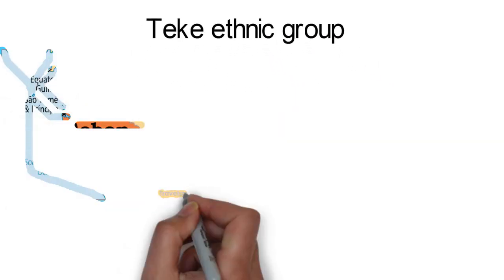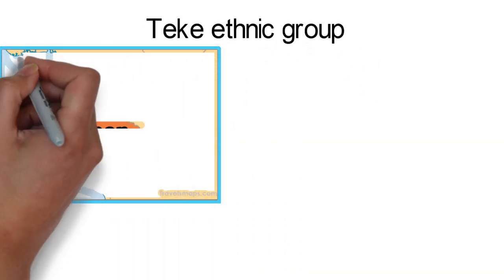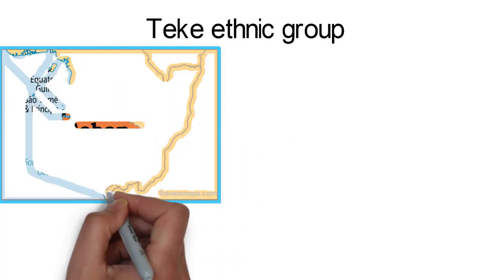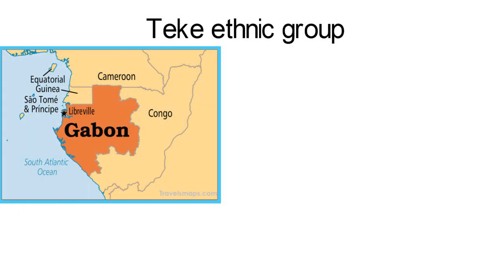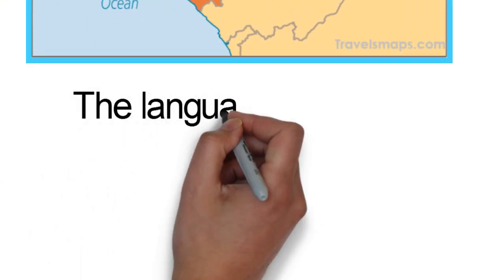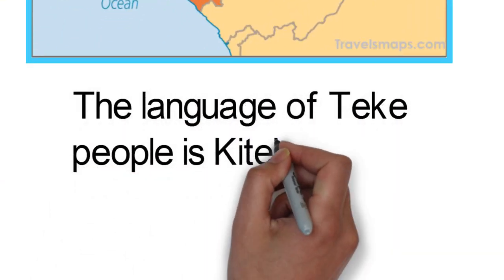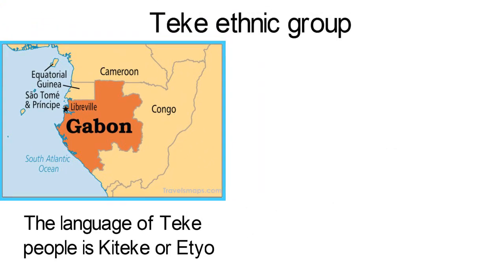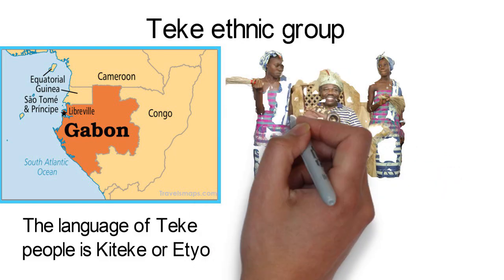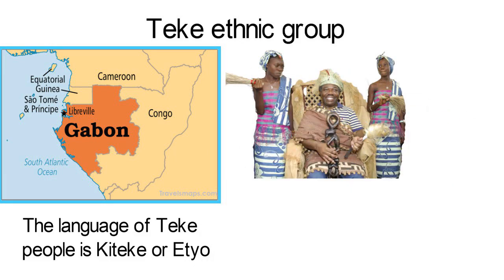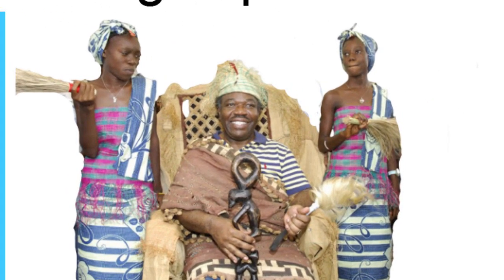Teke ethnic group. The Teke are a minority in Gabon, numbering about 160,000 people from Gabon's total population of about 2 million. The language of Teke people is Kiteke language or Etio. Like the Fang language, it is a Bantu language which also belongs to the larger Niger-Congo language family.